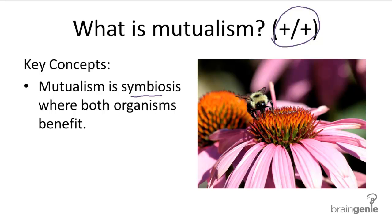The easiest example of a mutual symbiotic relationship is what we commonly know: the bee and the flower. In this pairing, the bee benefits from the flower by drinking its nectar for food. The flower also benefits because the bee helps cross-pollinate the flowers and ensures the flower's reproductive success. So you can see that they both live in very close association, come in contact often, and both organisms benefit.